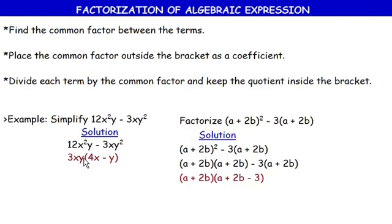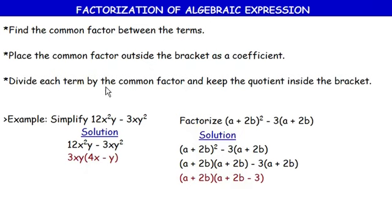So 3xy becomes our common factor. We place the common factor outside the bracket as a coefficient, then divide each term by the common factor and keep the quotient inside the bracket.